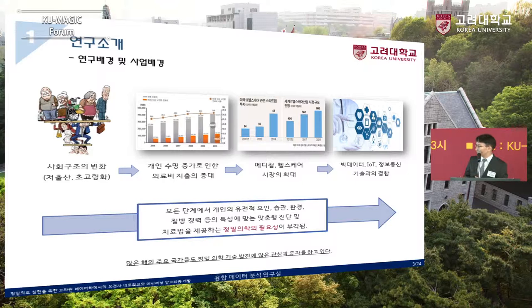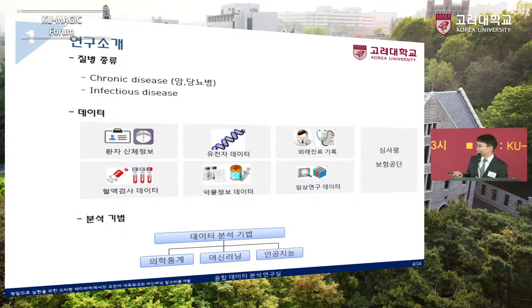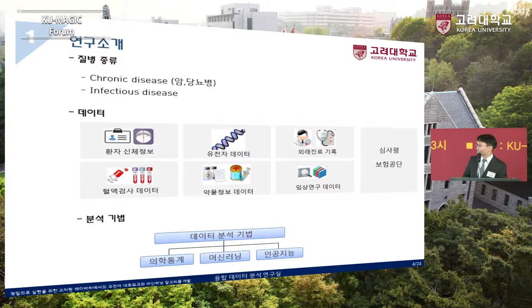질병의 종류는 미국에 있을 때는 infectious disease에 관련된 데이터 분석을 많이 했는데, 한국에서는 최근에 chronic disease, 암에 관련된 데이터 분석을 하고 그 외에 당뇨병에 관련된 데이터 분석을 하고 있습니다.